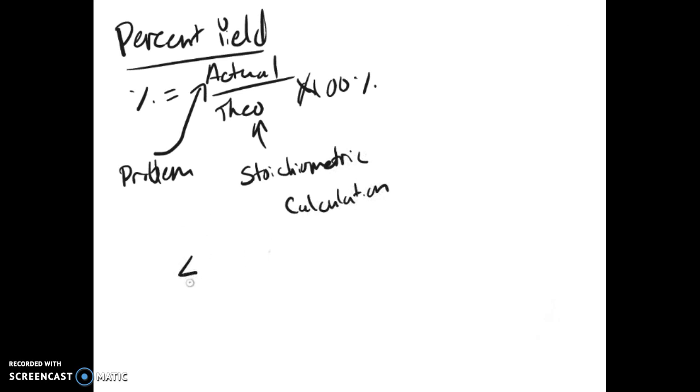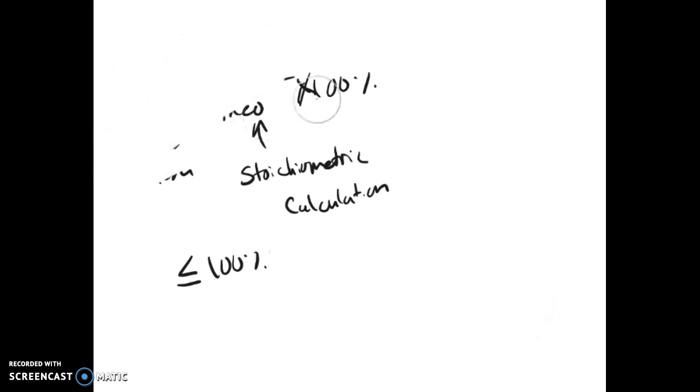Now the percent yield is always less than or equal to 100%. There is no way for it to be greater or you've done something wrong. The actual yield most of the time is going to be lower than what it theoretically should yield because there's always something wrong with the problem, even if it's not just human error. Sometimes the reaction doesn't completely carry out, the reaction doesn't finish, or it doesn't use up all of the reactants, even if there is a limiting reactant.